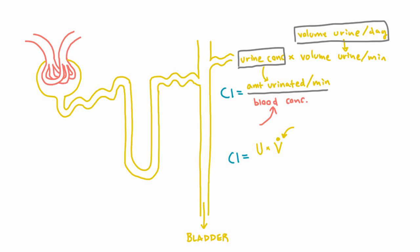So that's a urine flow rate divided by the plasma concentration of the substance. Sometimes you might see UX and PX and CLX meaning the clearance of substance X is equal to the urine concentration of substance X times the urine flow rate divided by the plasma concentration of substance X.